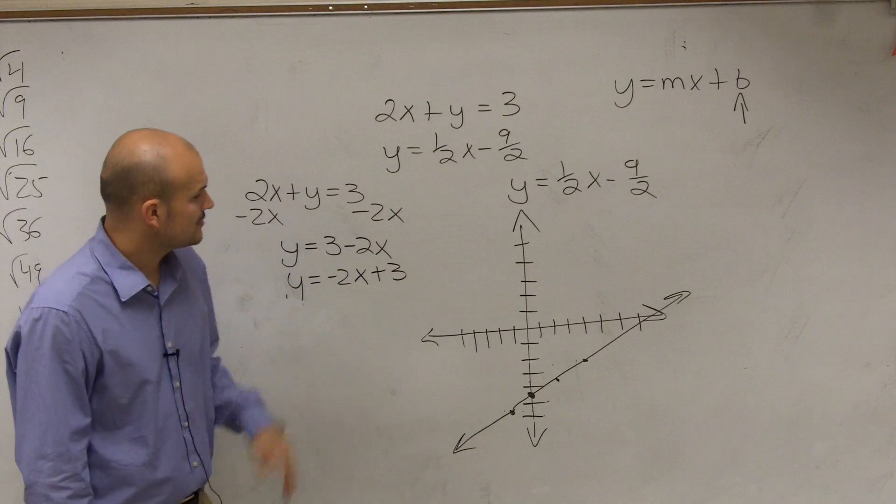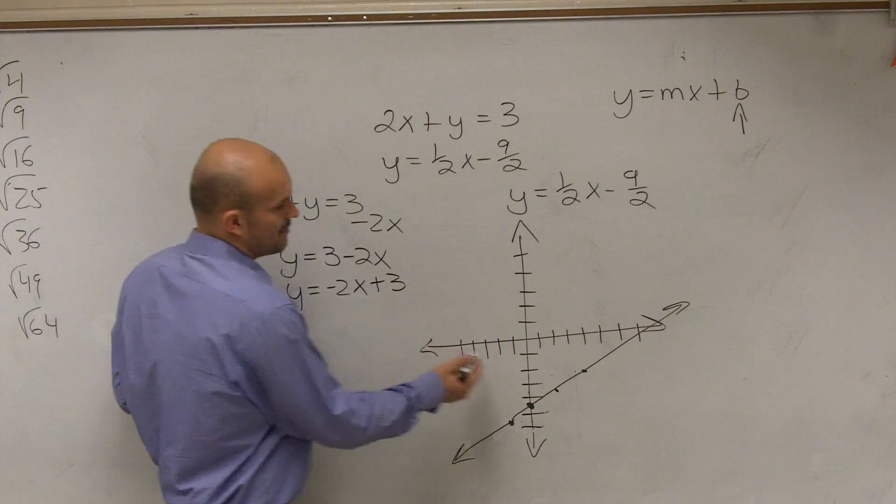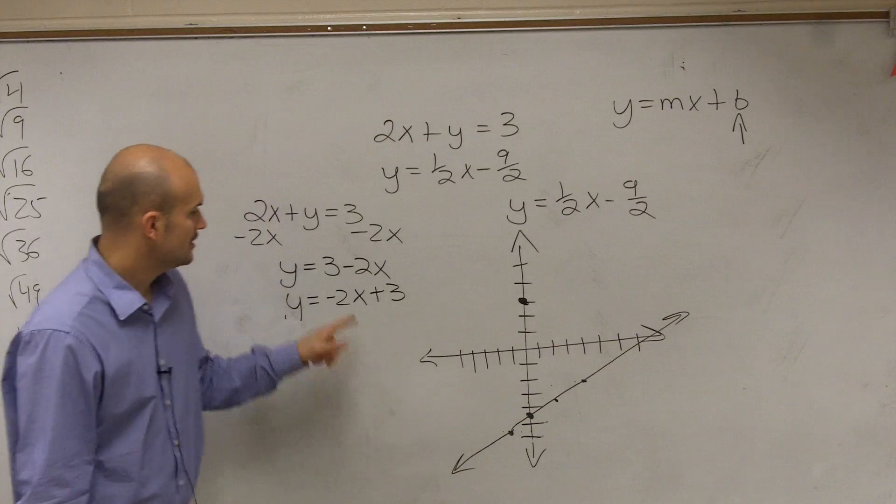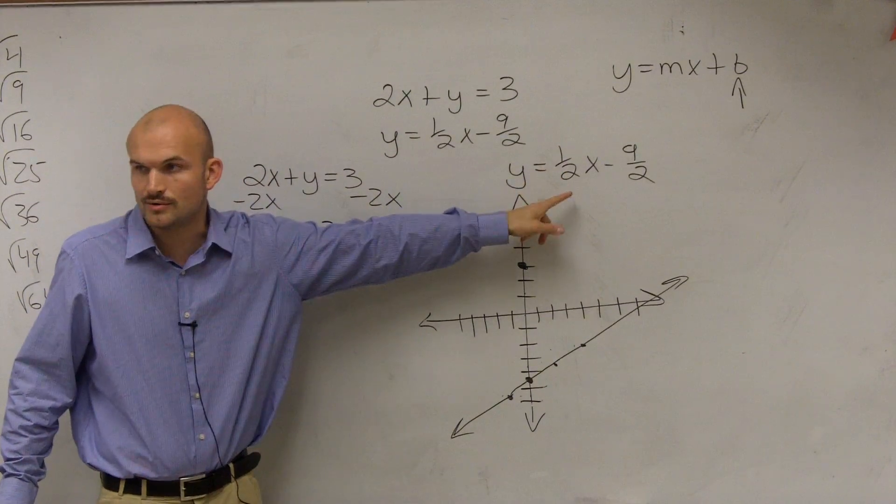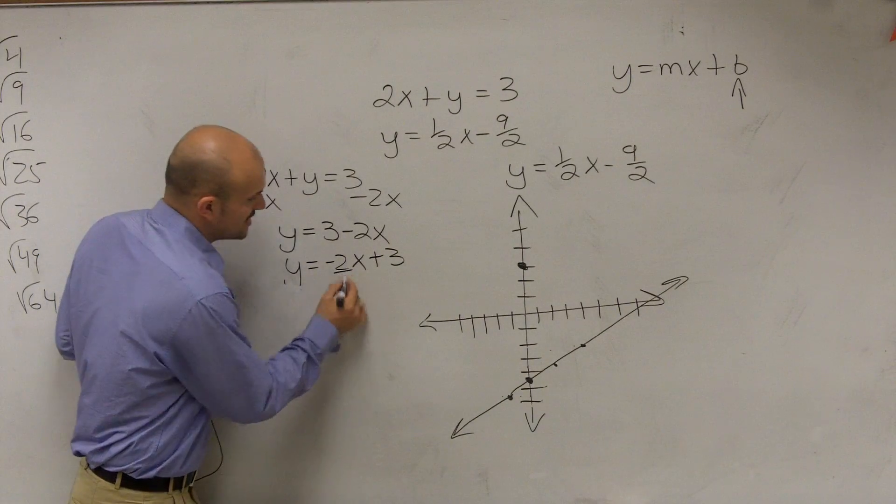So now we look at y = -2x + 3. So now the y-intercept for this problem is at positive 3. So I go up to 3 and make a dot. Now the slope is not a fraction. So this one was easy, up 1 over 2. But this one, it's just a number. So remember, we've got to change that to a fraction.